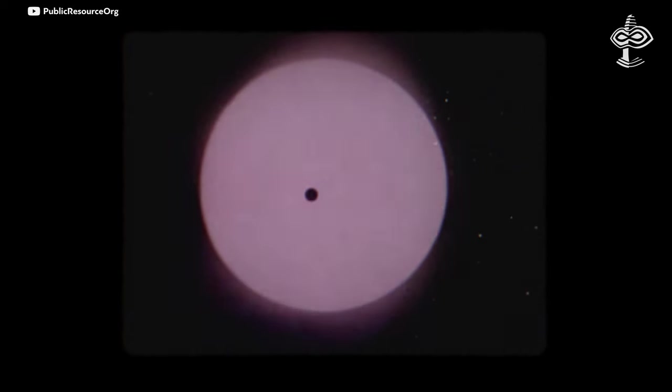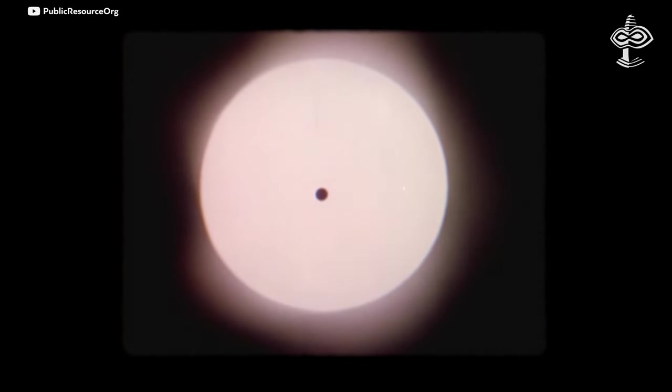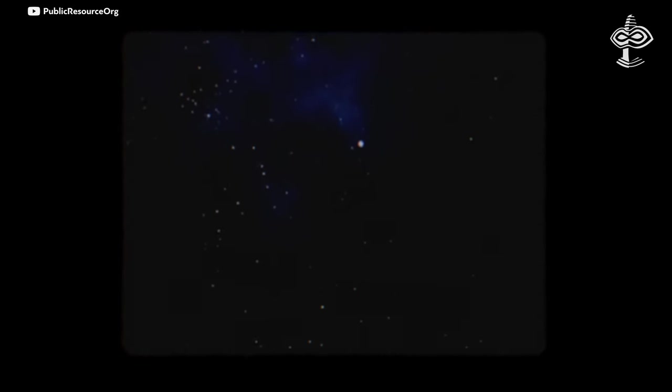This is quite surprising, since from the standpoint of current scientific knowledge, changes in the relative position of the Earth, Moon, and Sun do not affect processes of chemical reactions. Do we observe the participation of some intermediaries in the influence of the cosmos on such processes in complex systems?